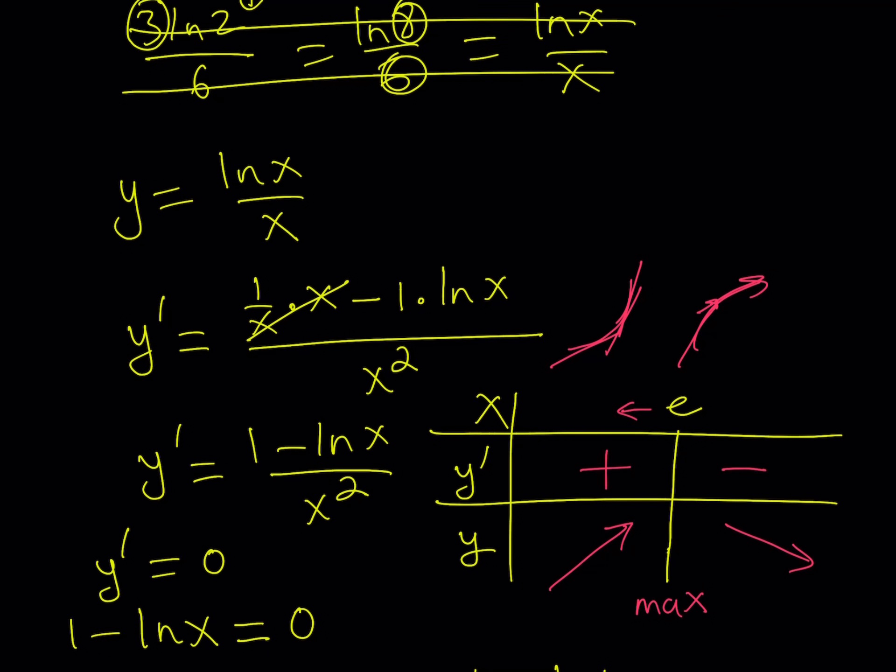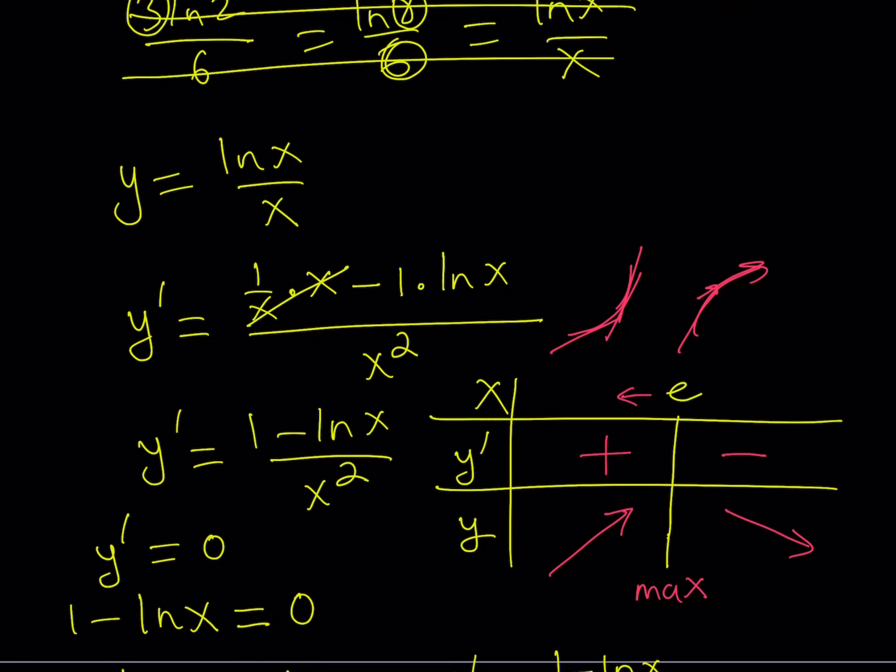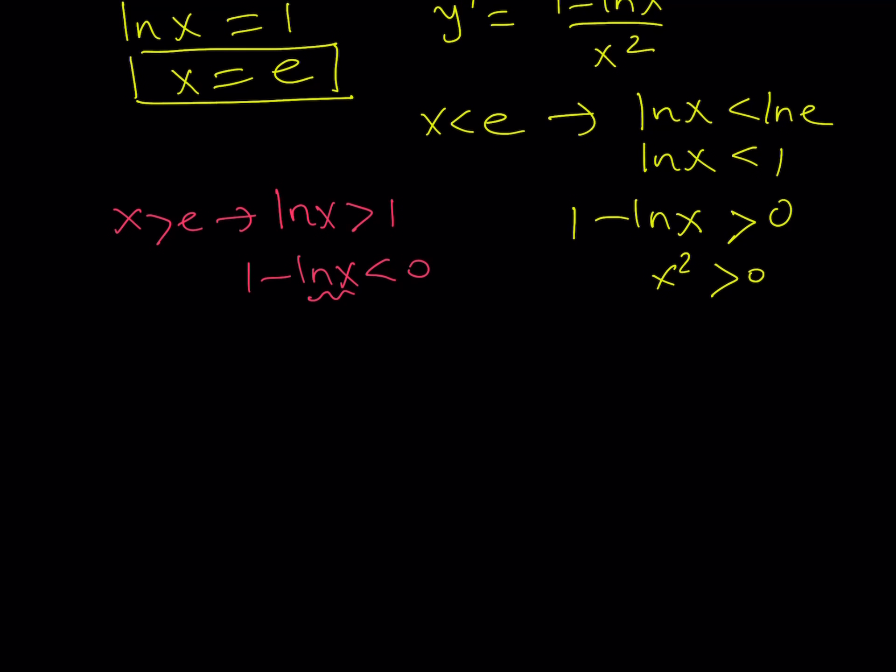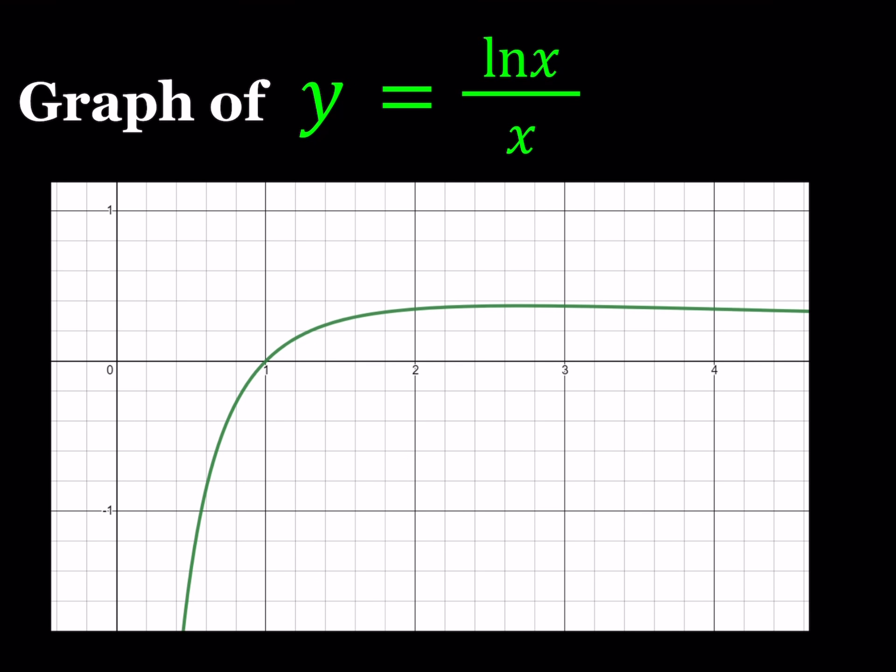But what happens at x equals e? Let's find out. If you replace x with e, y at e, or you can write it as f, whatever, ln e is going to be 1, 1 over e. So we get a point e, 1 over e is going to be a local max for this function. Now, what is that supposed to mean? Well, it just means that we're going to have a maximum between 2 and 3. So now let's take a look at the graph. What does the graph of y equals ln x over x look like, right?